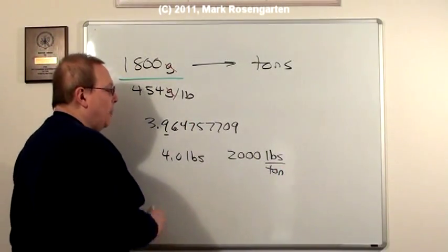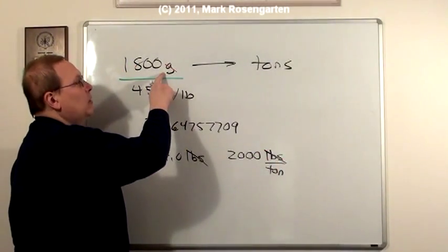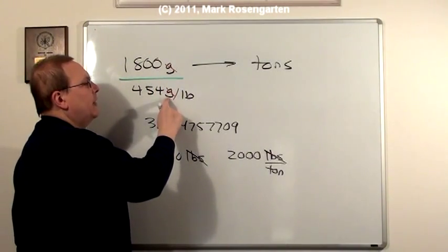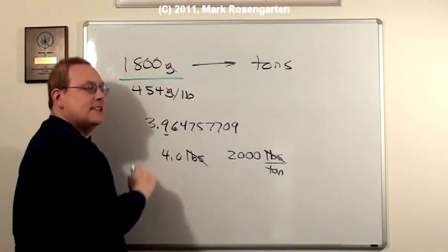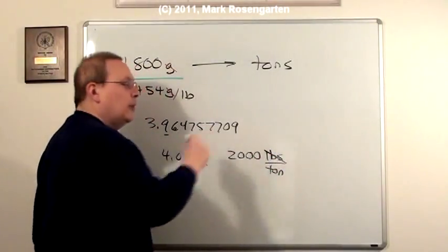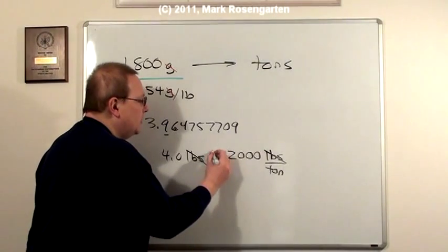So what do we do to cancel out pounds and be left with tons? Once again, we had grams, and then grams was the numerator of our conversion factor. So we had to divide to cancel out the grams. Well, the same thing applies here. We have pounds, and pounds is the numerator of our conversion factor. So to cancel it out, we have to divide.